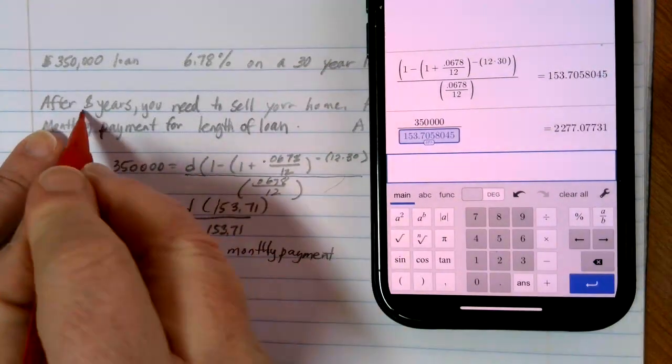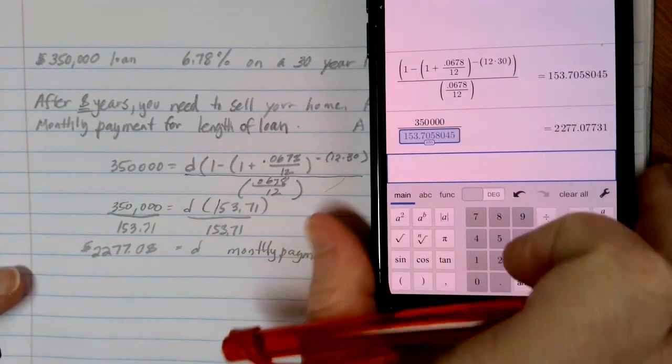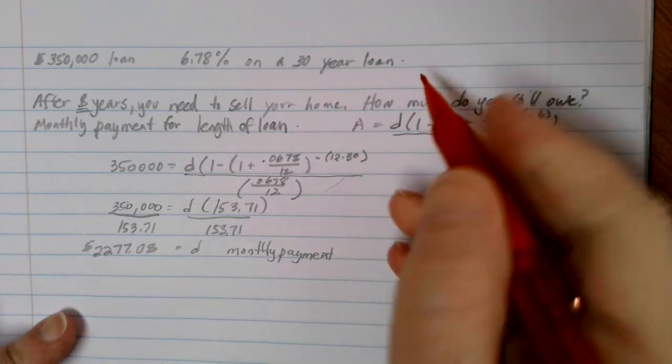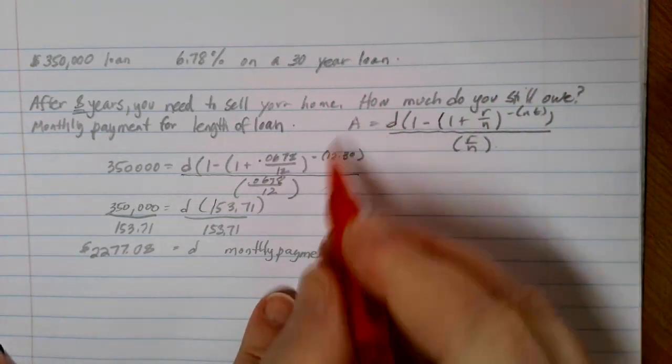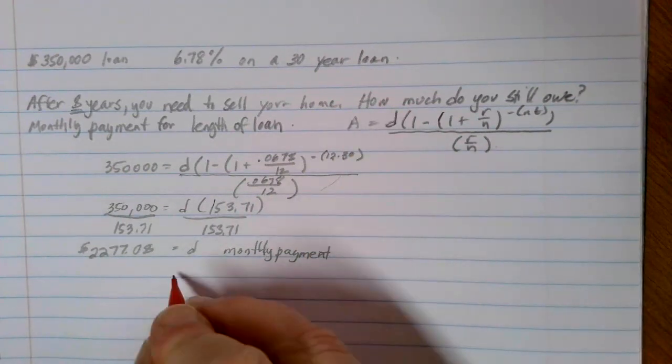Now, after eight years, I want to sell my house off. So what I need to do is figure out how much is remaining on the loan. The way that we're going to do this is a little bit kind of backwards, and that is we're going to use our loan formula.